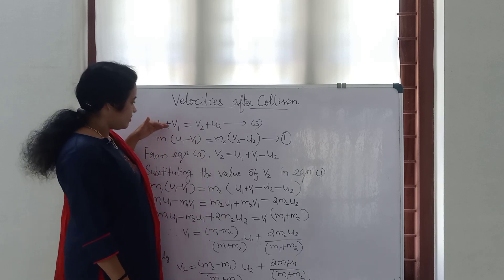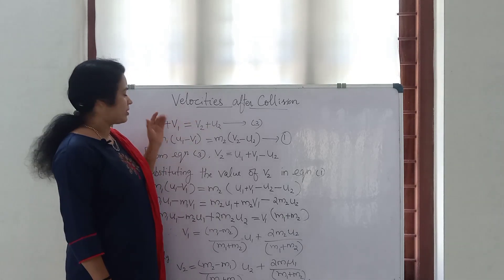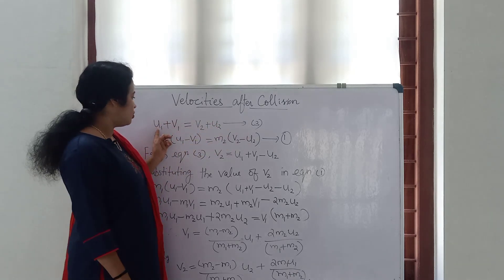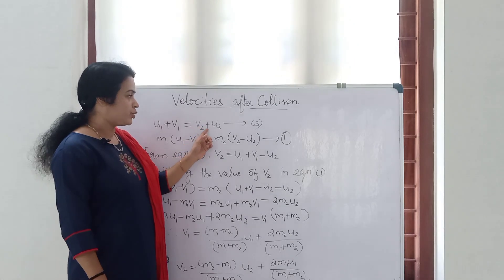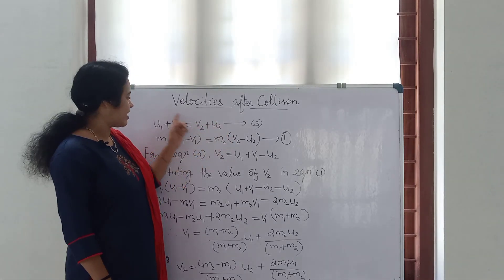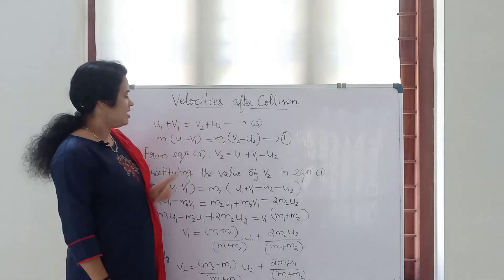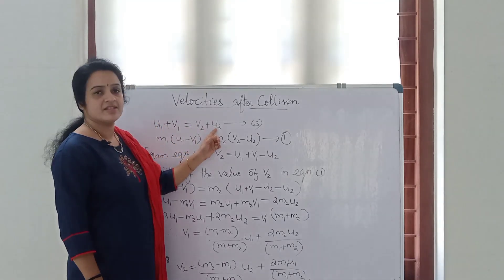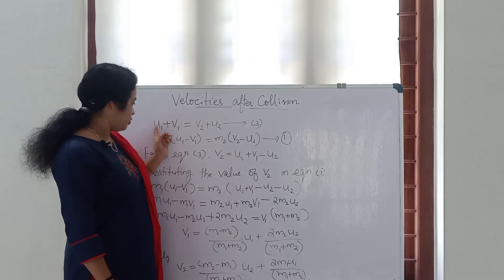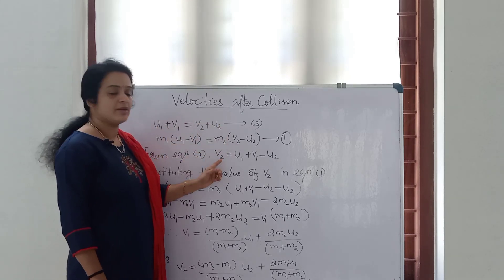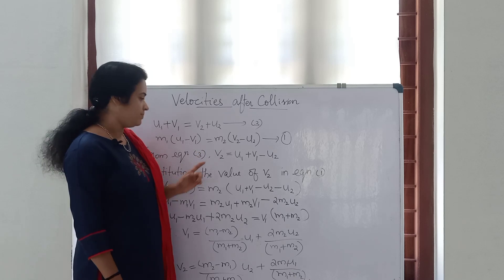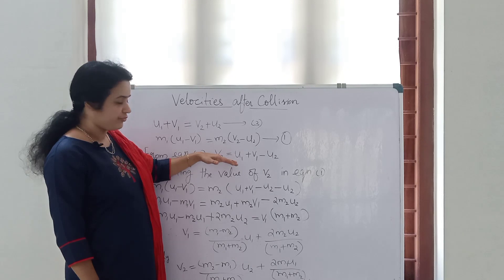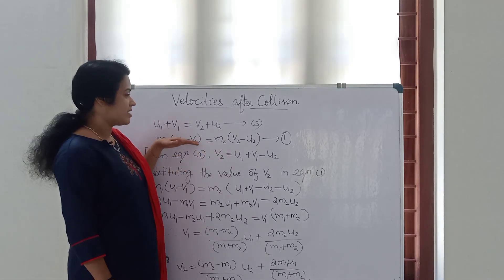We can find v2 from Equation 3. That is: u1 plus v1 is equal to v2 plus u2. When we rearrange, we get v2. So v2 will be equal to u1 plus v1 minus u2. Now we have to substitute the value of v2 in Equation 1.